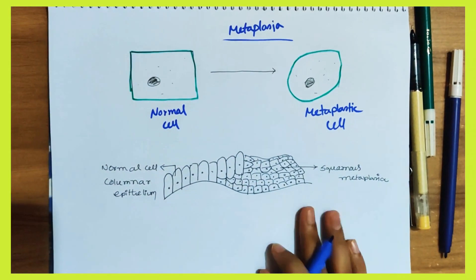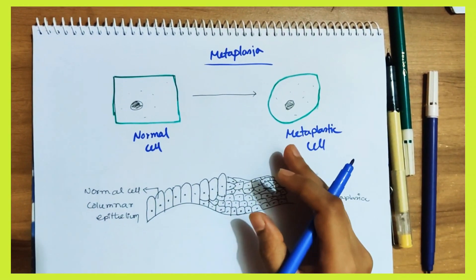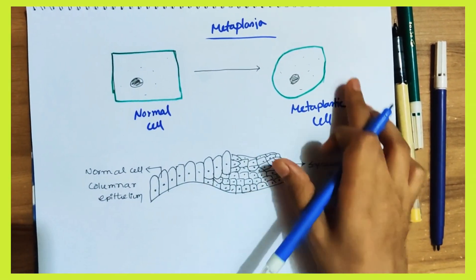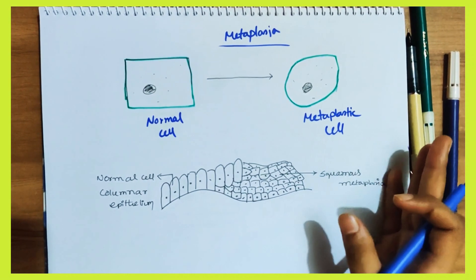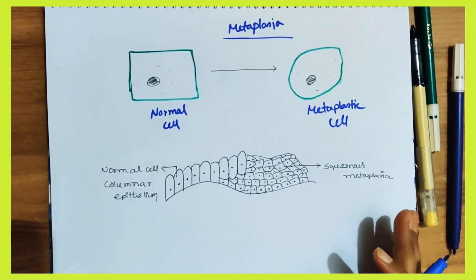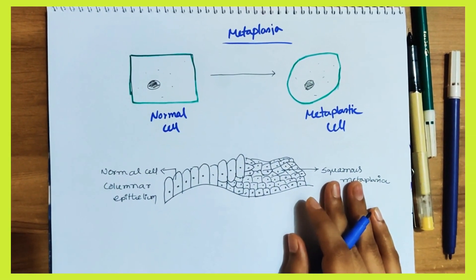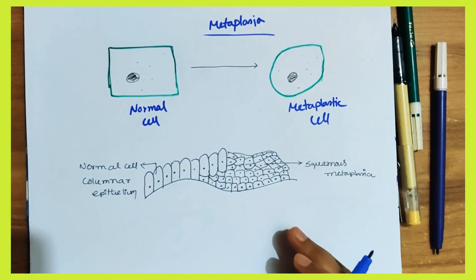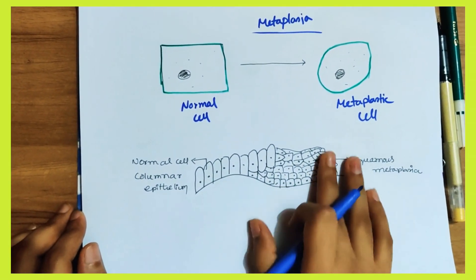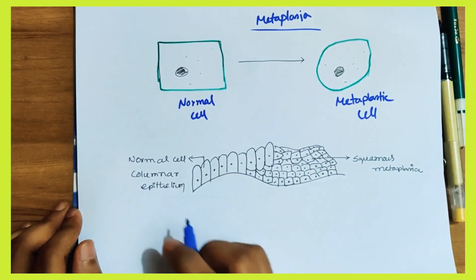The fourth type is metaplasia. Metaplasia is the adaptive response where the normal cells — the adult cell type — have been changed. The metaplastic cell type has changed, but the cell number is the same. Only the cell type has changed. This is a histological cell type change. Let's look at the epithelial metaplasia — the epithelial layer is changed. The example is the bronchial epithelial layer.